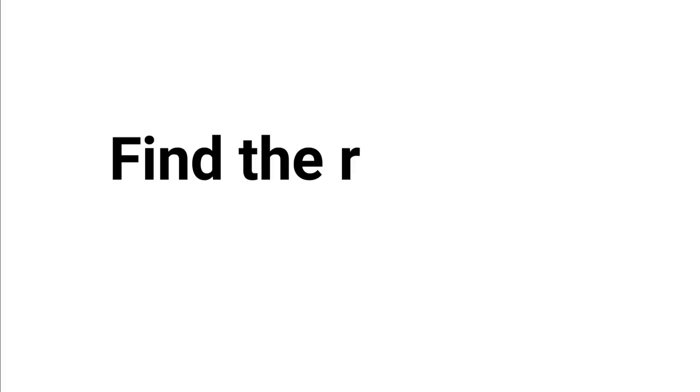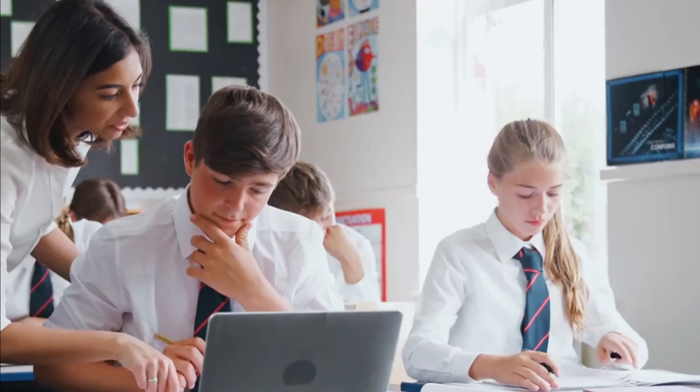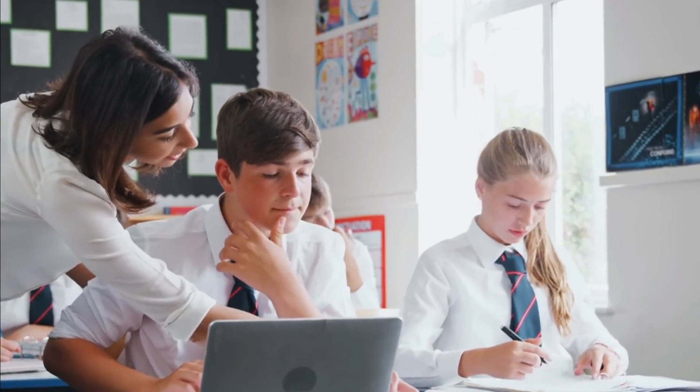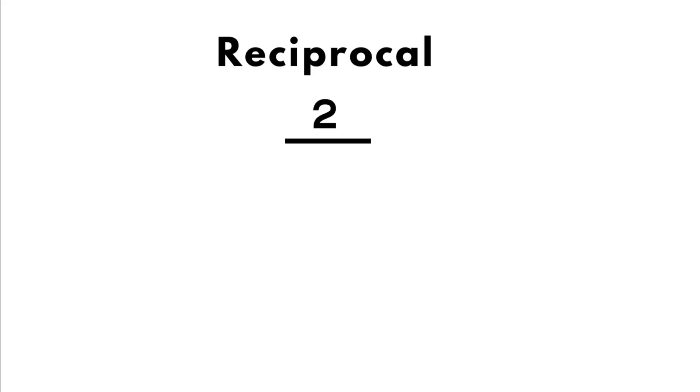Why not pause the video and find the reciprocal of the real number 2 thirds, which is also a rational number. Well done students — I'm sure some of you would have realised that to find the reciprocal of a fraction quickly, we could just flip the fraction to get our answer. The reciprocal of 2 thirds is therefore 3 halves, as shown here.